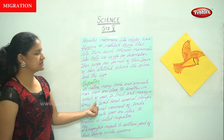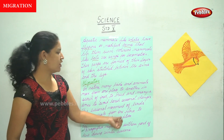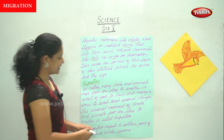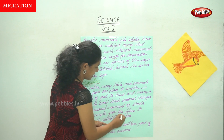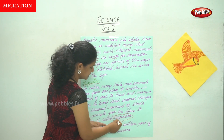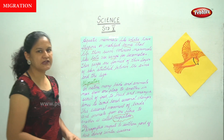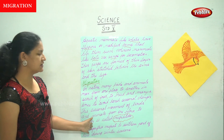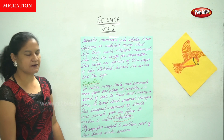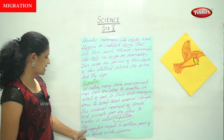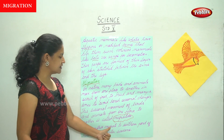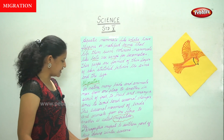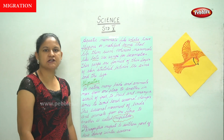This seasonal movement of birds and animals from one place to another is called migration. An example of migration is dragonflies that migrate to the southern parts of Asia during the winter season.